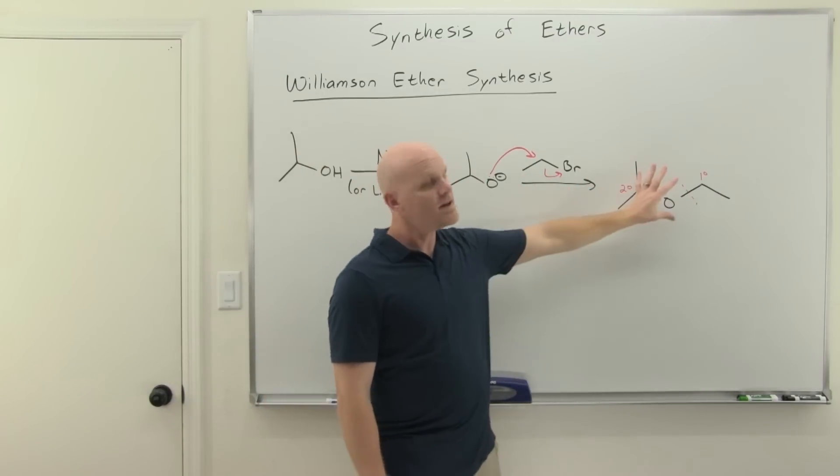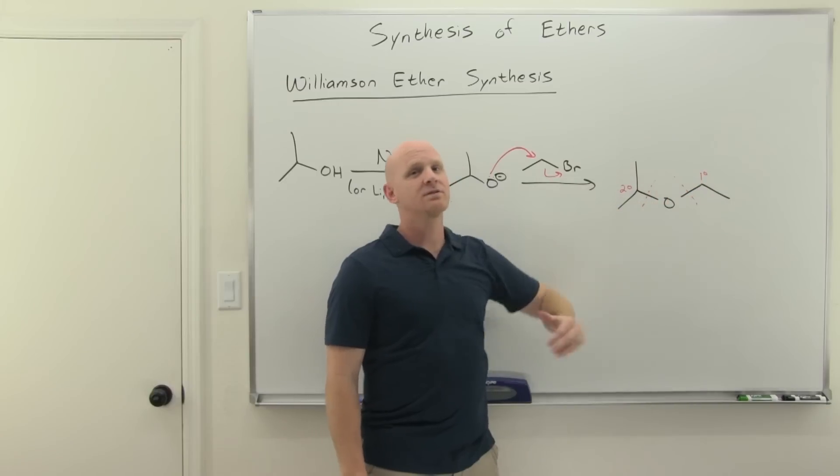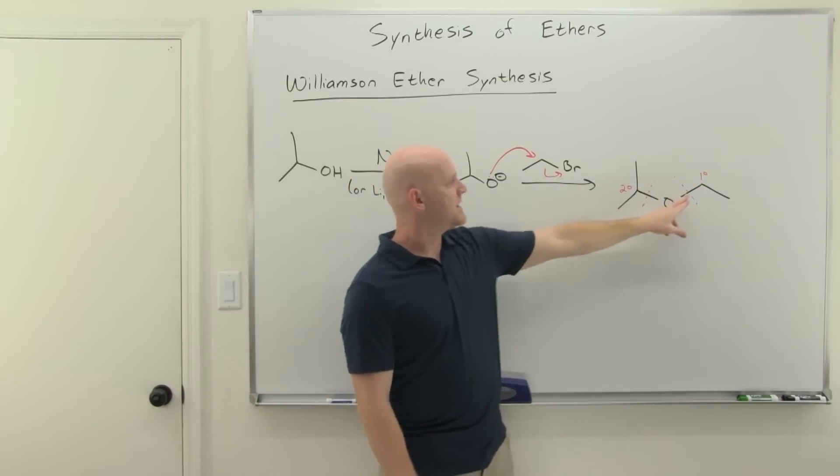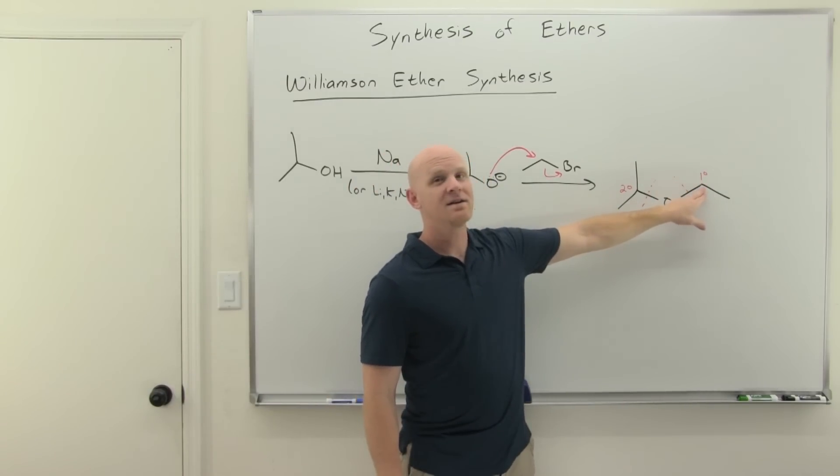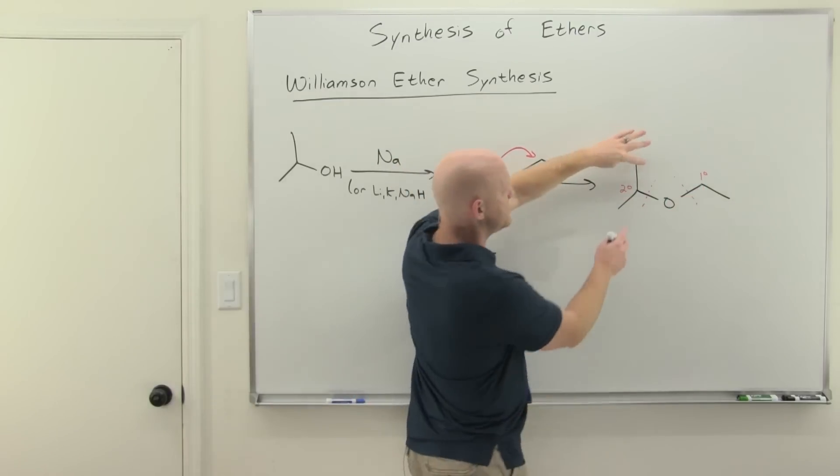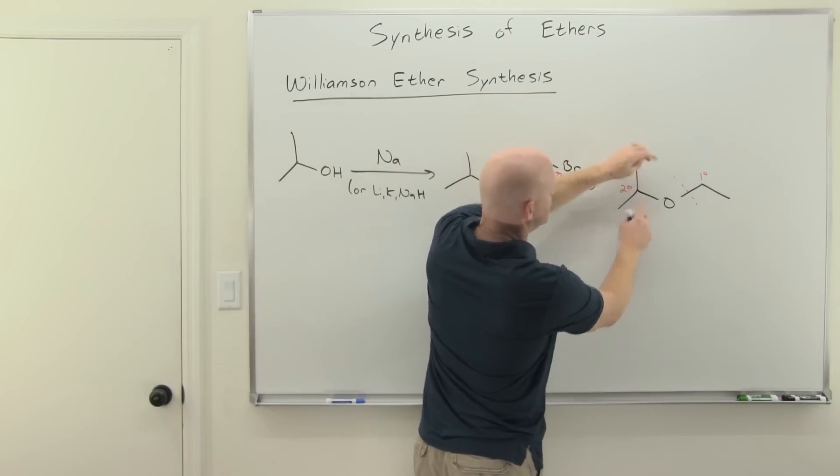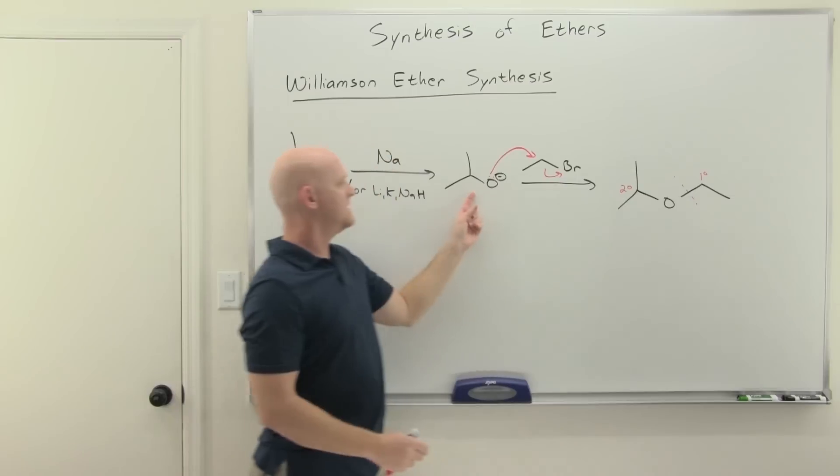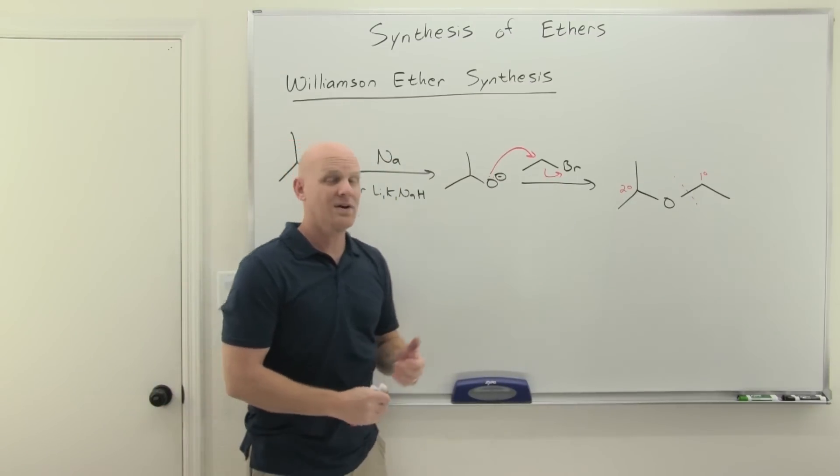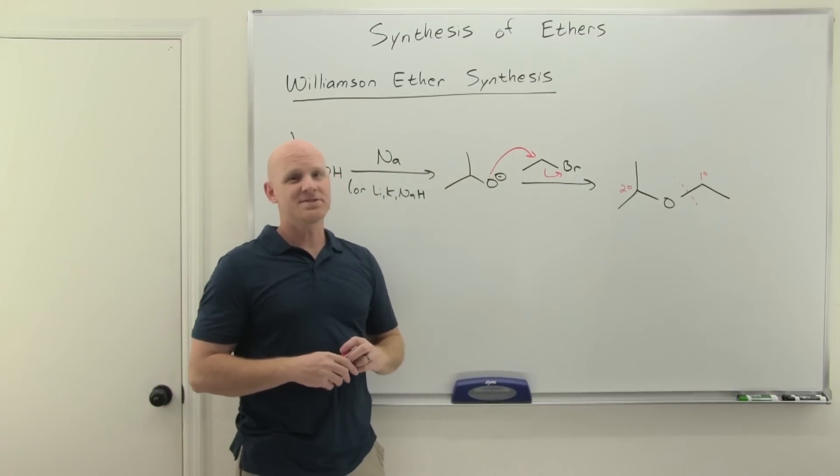And so if you're asked to give the best synthesis for a particular ether via the Williamson ether synthesis, make the less substituted side the alkyl halide, and then the more substituted side the alkoxide that came from the corresponding alcohol. That is the Williamson ether synthesis.